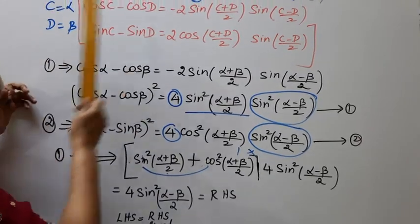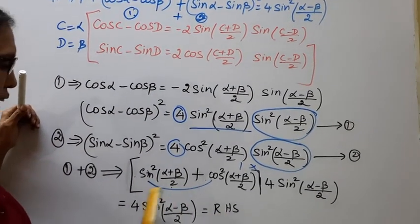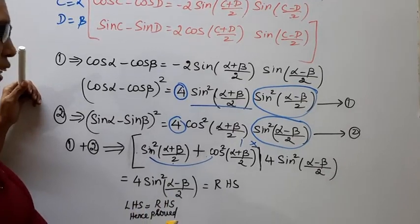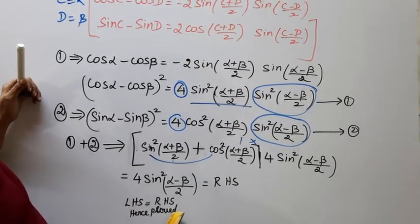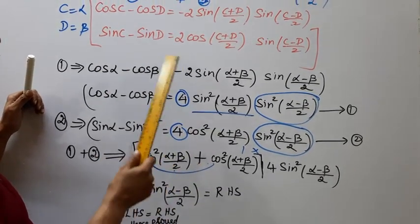Therefore the result is 4 sin square (α minus β) by 2, which equals the right hand side. Left hand side equals right hand side — hence proved.